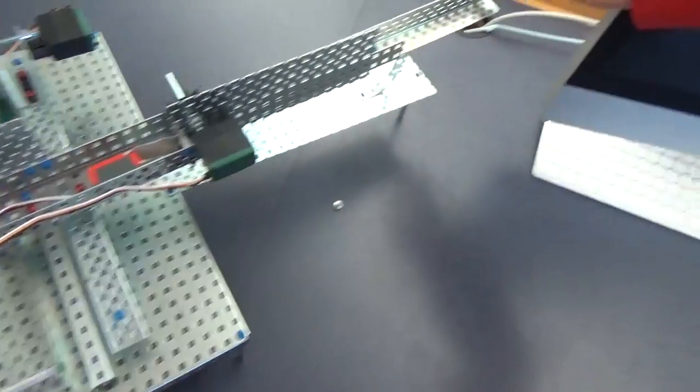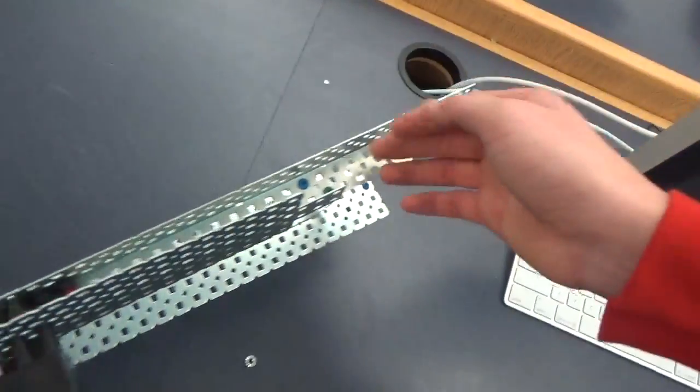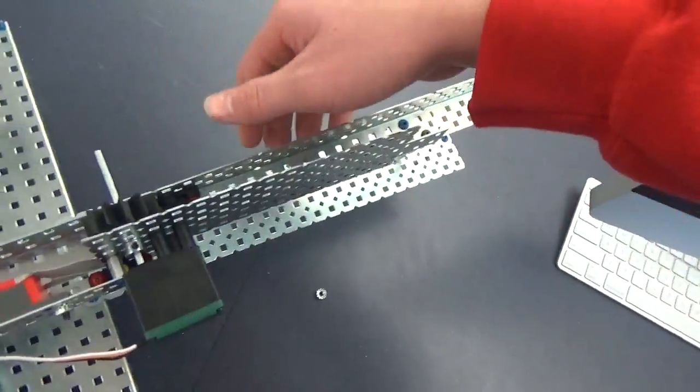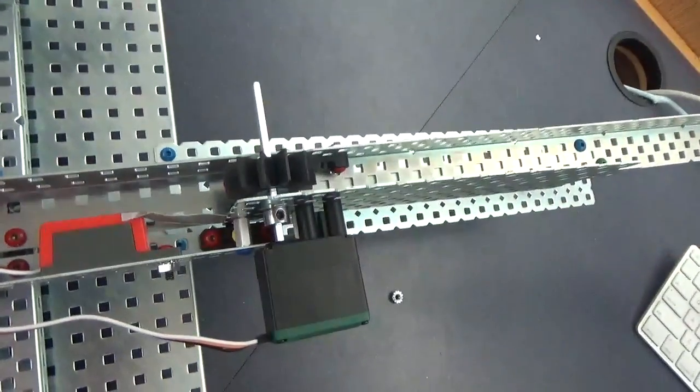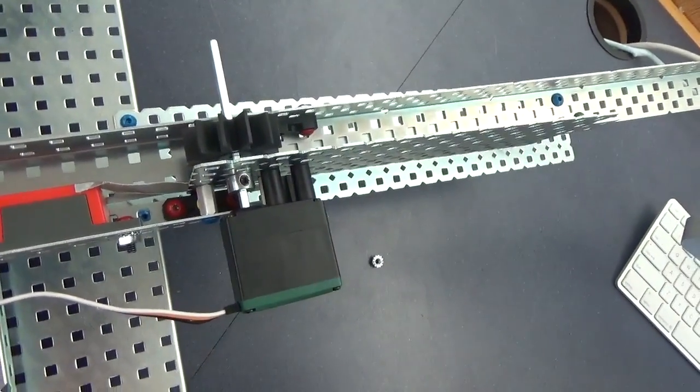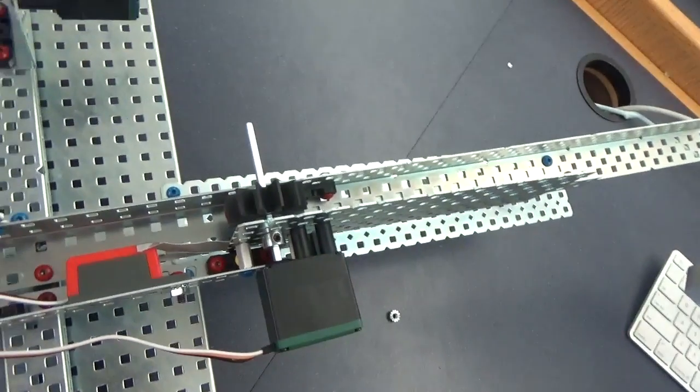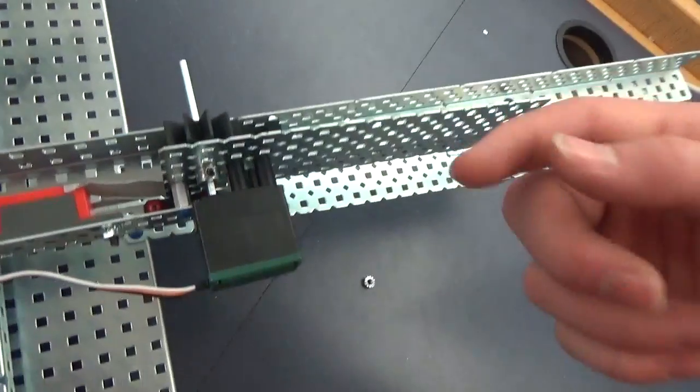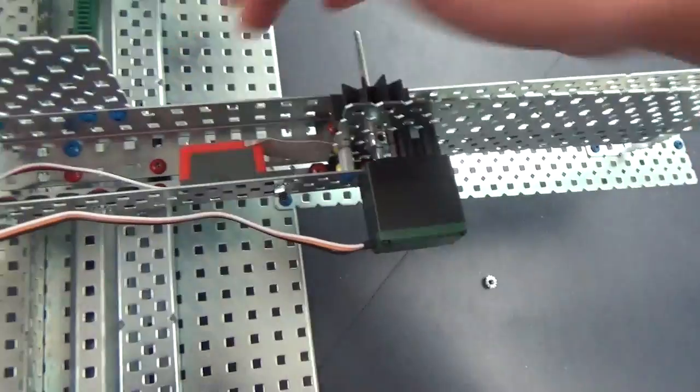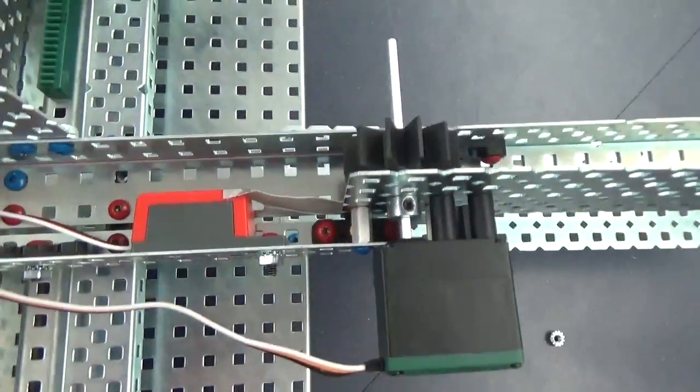Our hopper is pretty straightforward. You put the balls in here, and the weight of the ball will go down the slope into the first door or servo, and it will let one ball out at a time, rolling past our light sensor, which will catch the color of the ball.